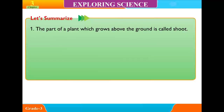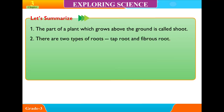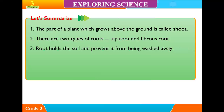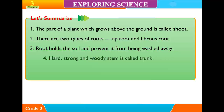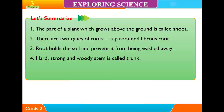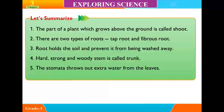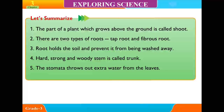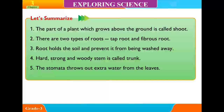Let's summarize: 1. The part of a plant which grows above the ground is called the shoot. 2. There are two types of roots: taproot and fibrous root. 3. Roots hold the soil and prevent it from being washed away. 4. A hard, strong and woody stem is called a trunk. 5. The stomata throw out extra water from the leaves.